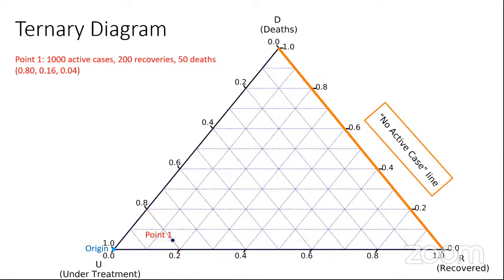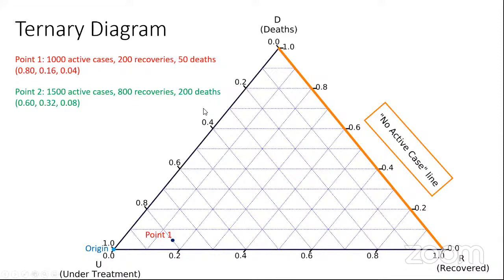Another demonstration: if there are more recoveries and more deaths — for example, 1,500 active cases, 800 recoveries, 200 deaths, or 60%, 32%, and 8% respectively — we again identify the percentages in the lines, determine the intersection, and that would be our second point. This is how you plot the reported cases in a ternary diagram.